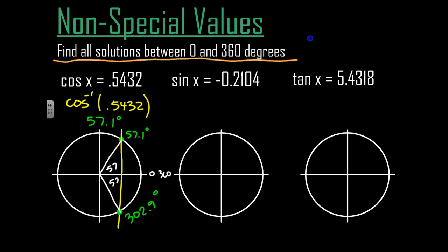Let's take a look at the next one. Where is the sine negative 0.2104? Well, if we just stop and think about this for a minute, the sine is negative down here. So my values are going to be down there in quadrants 3 and 4. That's where the sine is negative.